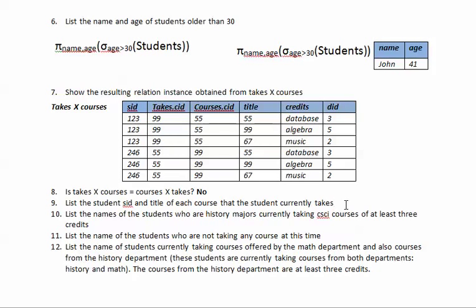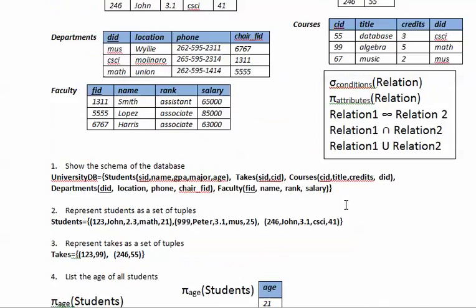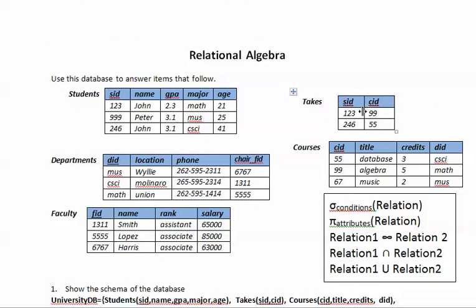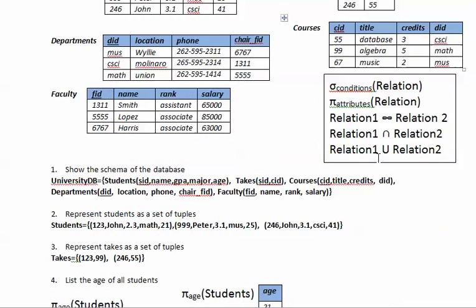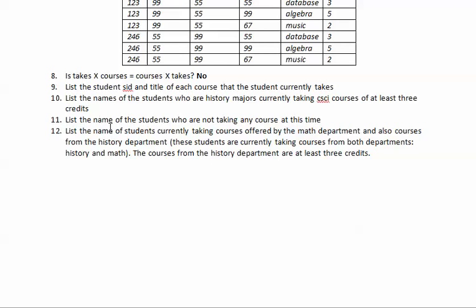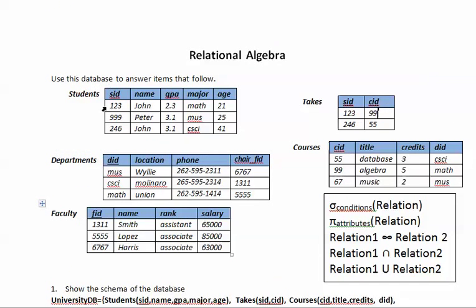Question nine: list the student SID and the title of each course that the student is currently taking. In 'takes', we have two students: student 123 is John taking course 99 (Algebra), and student 246 is taking course 55 (Database). The expected answer is 123 with Algebra and 246 with Database.